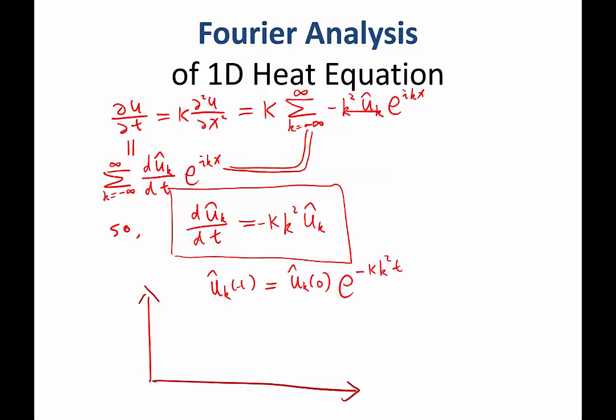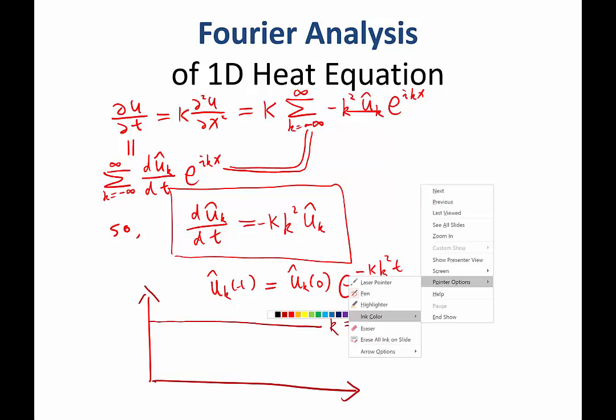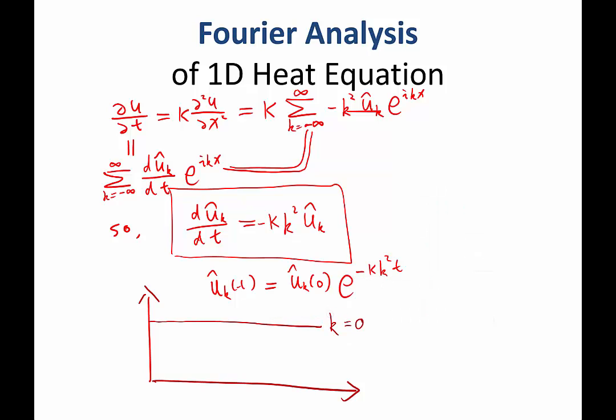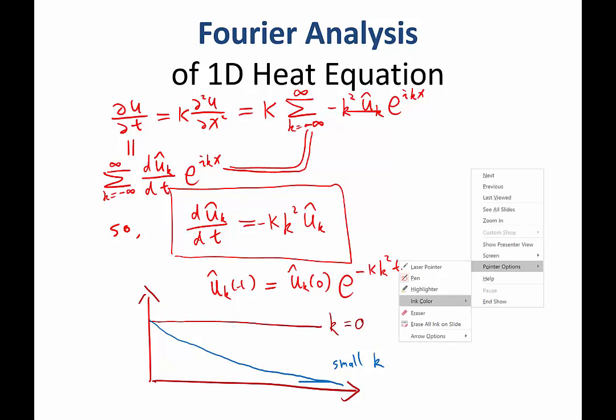So for small k, when k is equal to zero, what does the function look like? It's constant. So k equal to zero means constant term. So e to the i zero x, which means that term doesn't depend on x. It's a constant in space. So a constant in space term in the Fourier series doesn't change with time. Now let's look at a small k. So for small k, it's an exponential decay because minus kappa k square is always negative. Small k is a slow exponential decay.